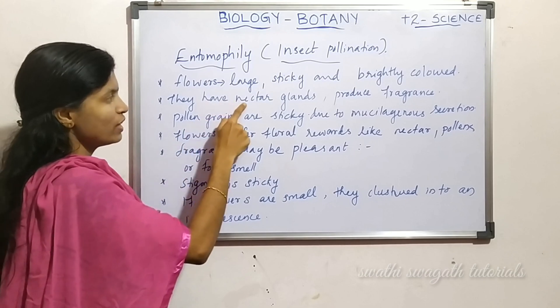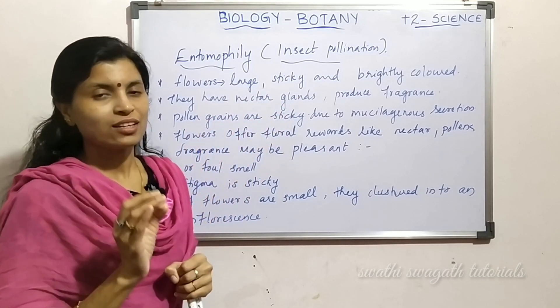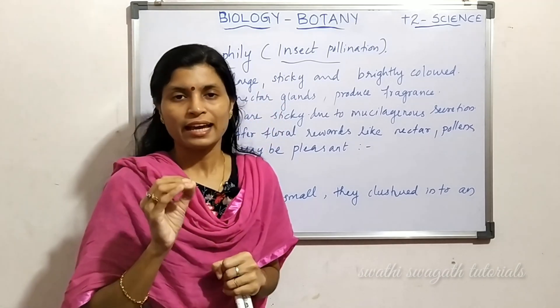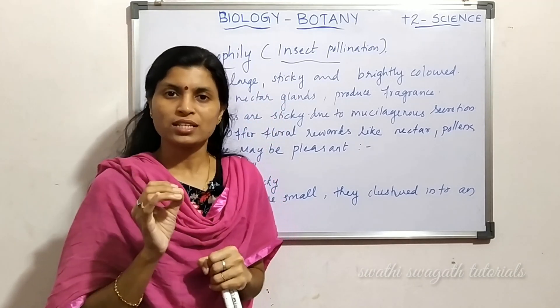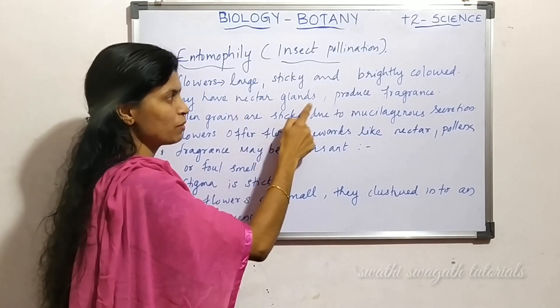Another character is the presence of nectar. They have nectar glands that produce nectar or honey. These nectar glands produce nectar and also produce fragrance.